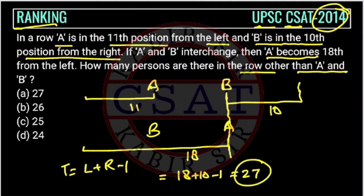So total 27 people are there in this row. But the question is asking - if you see, you got 27. I have seen many people just see 27 and mark it, but this is the wrong answer because the question is asking how many persons are there in the row other than - this is very important - other than A and B.